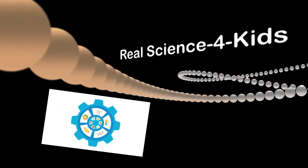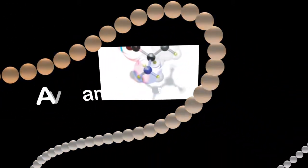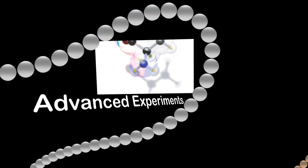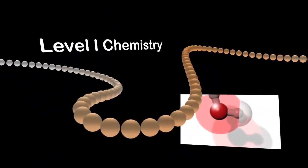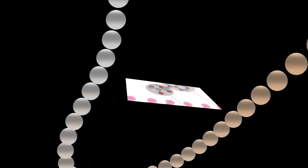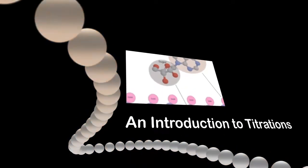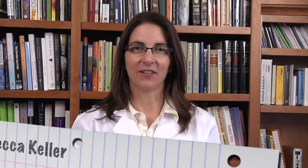Hello and welcome to Real Science for Kids. The videos in this series are the Advanced Experiments for Level 1 Chemistry. The title of this experiment is An Introduction to Titrations. Have fun discovering real science with Rebecca. Hi, I'm Dr. Rebecca Keller.